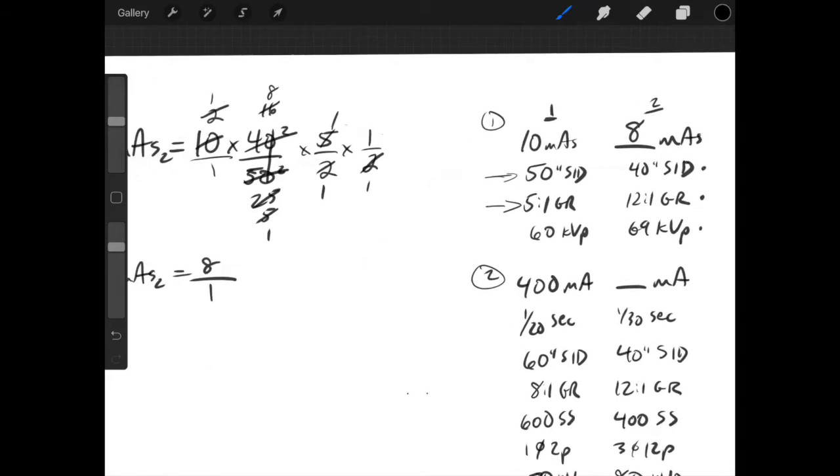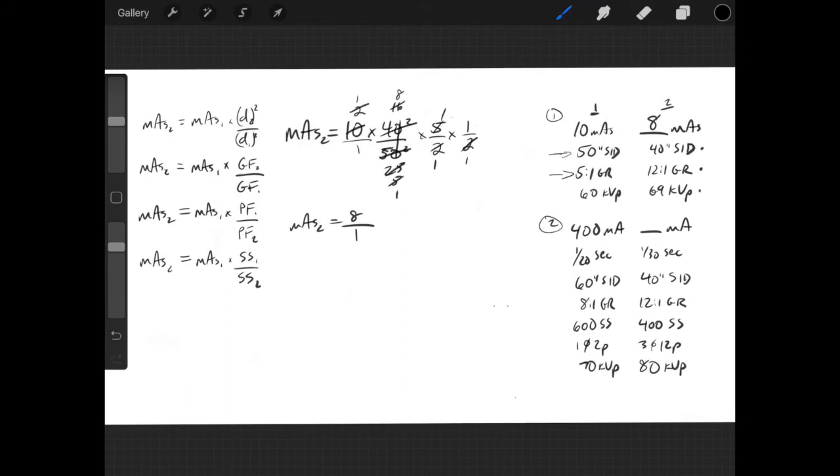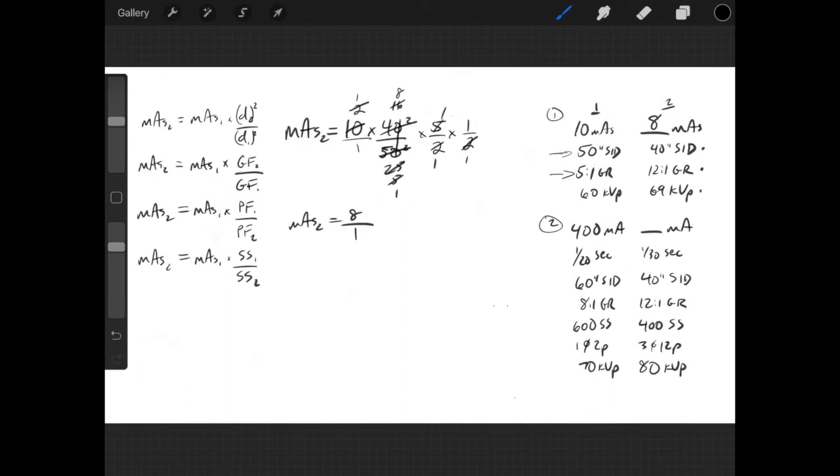So that would be our answer here. We've maintained density, all of that in one equation, which is really nice. You can always do this with a calculator, but I always recommend reducing. As long as you know how to reduce and the rules for reducing before you multiply everything out, you should be okay.